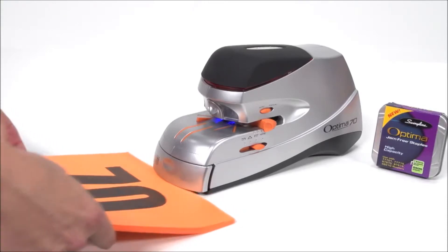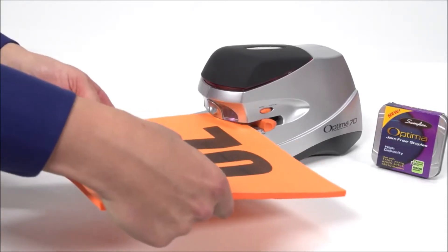Handy features make the Swingline Optima 70 Sheet Electric Stapler a breeze to use. A built-in thickness guide tells you if the document is larger than 70 sheets.